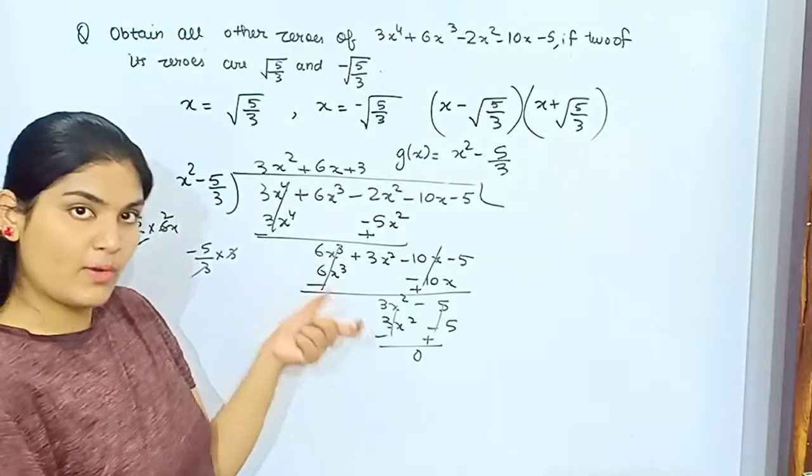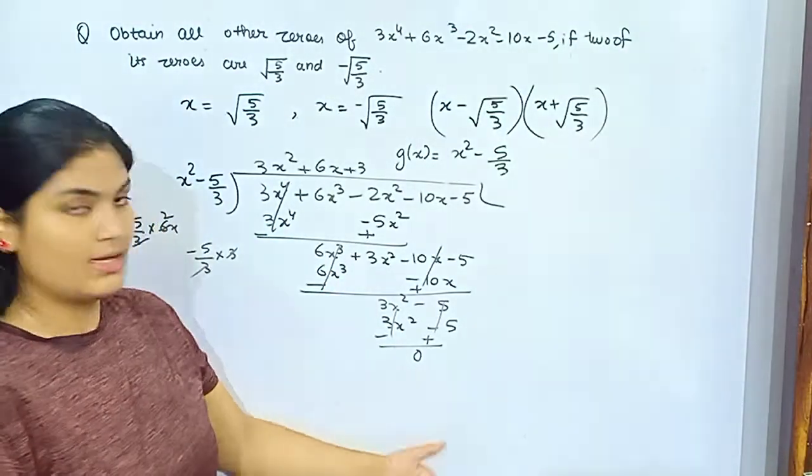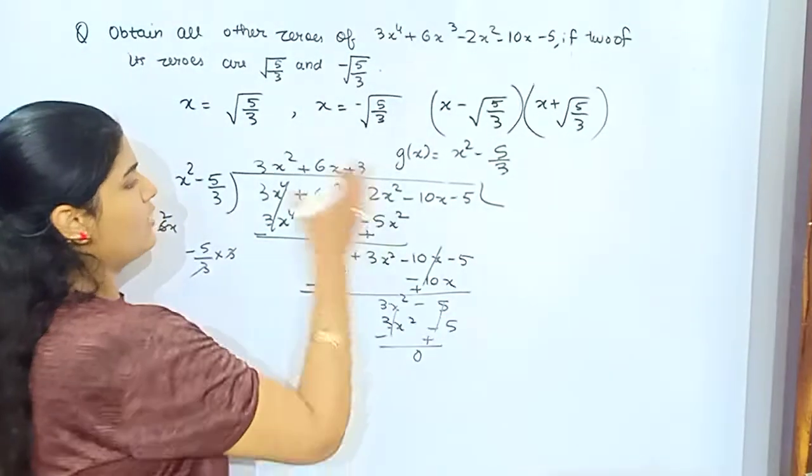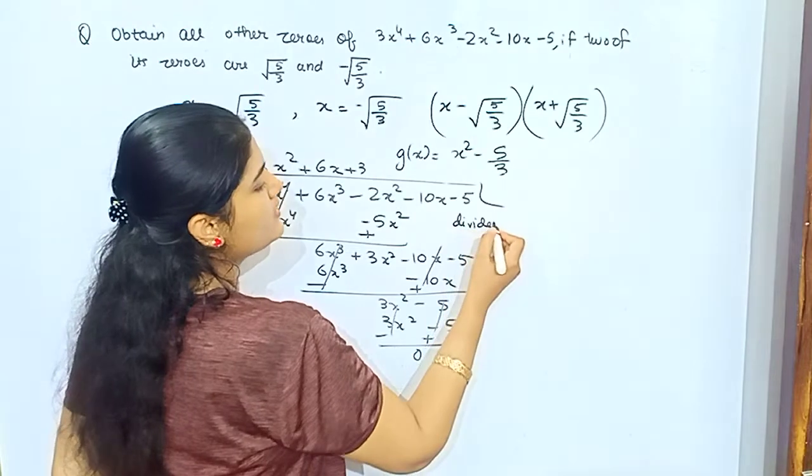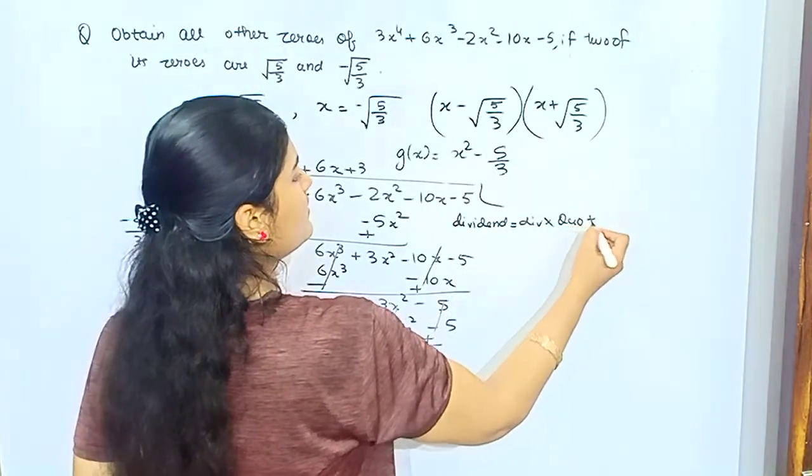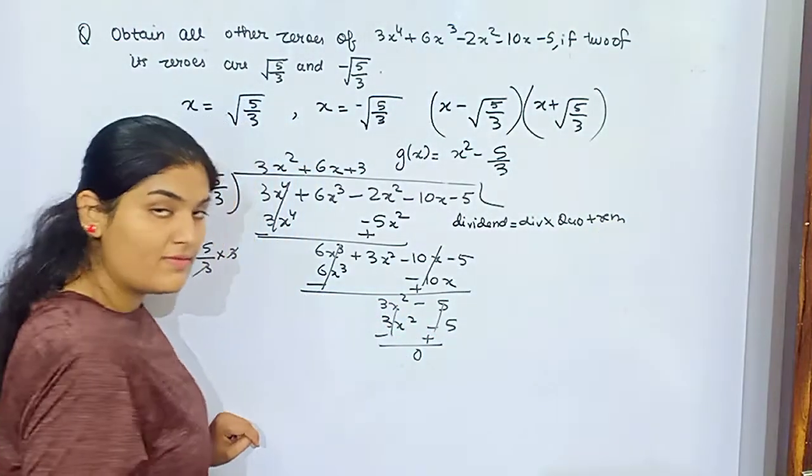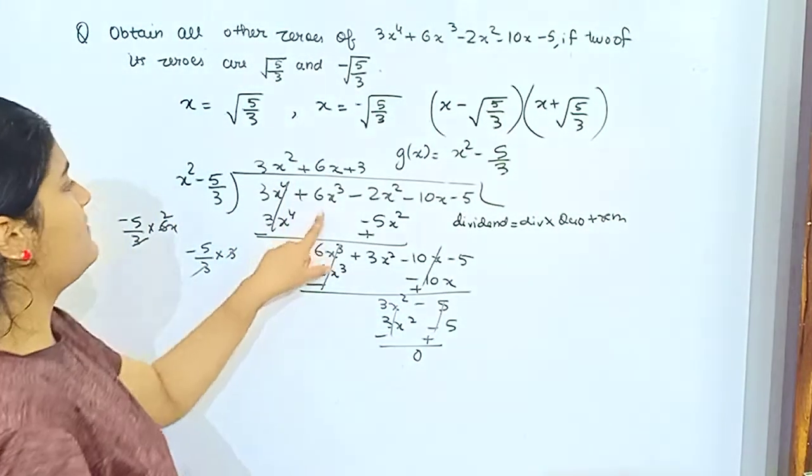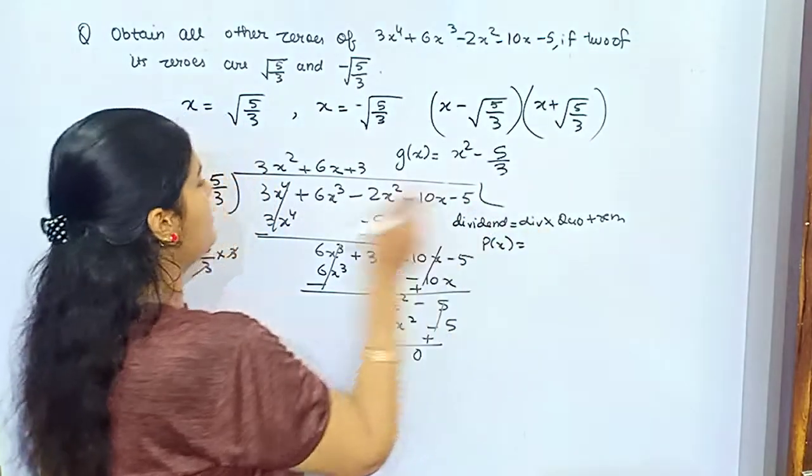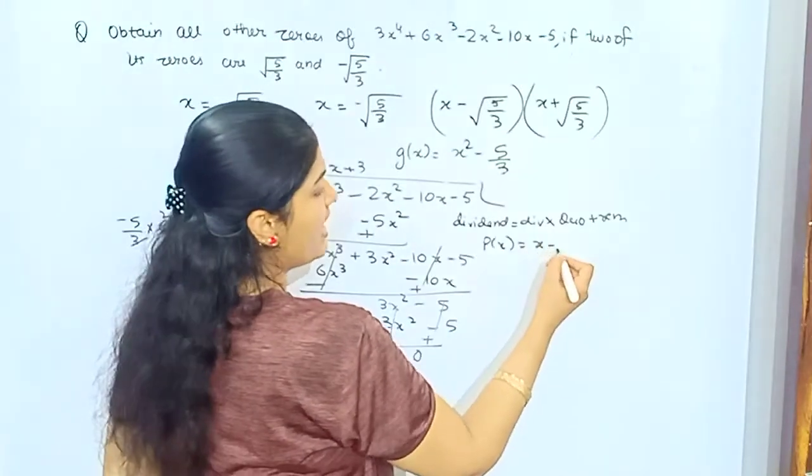You must get it as 0 because this is the form of factors, right? So factors of equation should satisfy it, so this should be 0. This must be 0. Now you can write it as dividend. So dividend equals divisor into quotient plus remainder, right? This is divisor division algorithm. So dividend is this, for which you are finding the roots. Divisor is this. You have already got two roots from that.